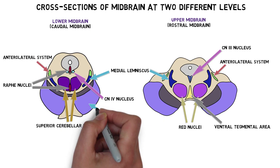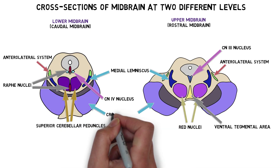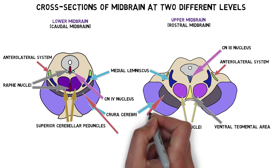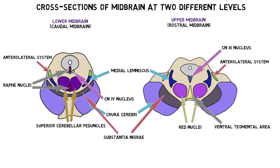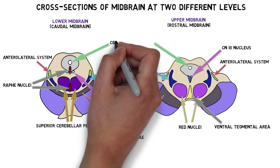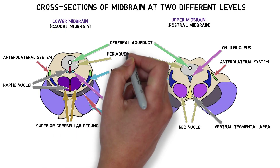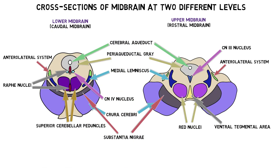The basis pedunculi include the crus cerebri, two large bundles of axons that contain fibers from motor pathways like the corticospinal and corticobulbar tracts. The basis pedunculi also include the substantia nigra, which is another major dopamine-producing structure in the brain. Finally, the area surrounding the cerebral aqueduct is called the periaqueductal gray, which is known for its role in pain inhibition.